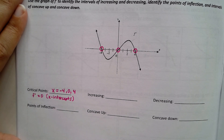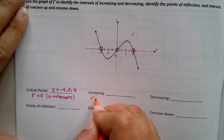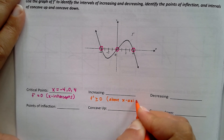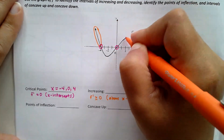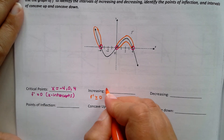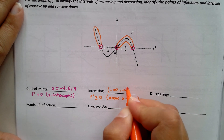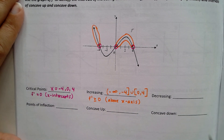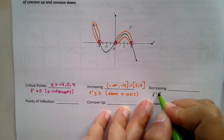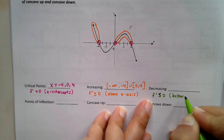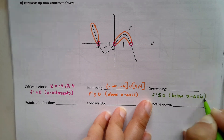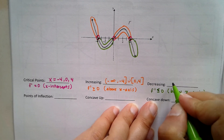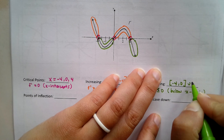Increasing is where the original function is going uphill, meaning f prime is greater than or equal to zero — where the graph of f prime is above the x-axis. That's the section from negative infinity to negative four and the middle section from zero to four, both with closed brackets. Decreasing is where the first derivative is less than or equal to zero — where the graph is below the x-axis. That's from negative four to zero and from four to infinity.